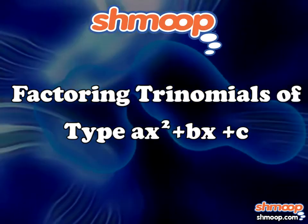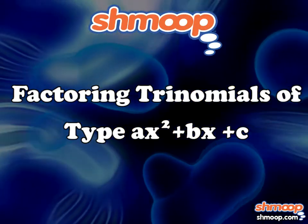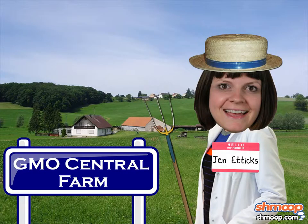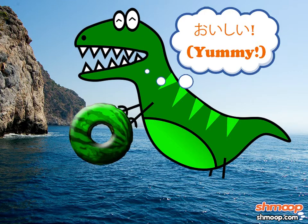Factoring trinomials of type AX squared plus BX plus C, a la Shmoop. Farmer Jen Eddix produces donut-shaped watermelons. Like Godzilla, they're huge in Japan.